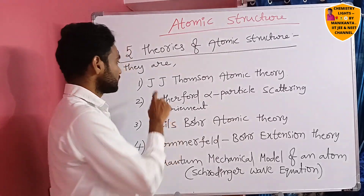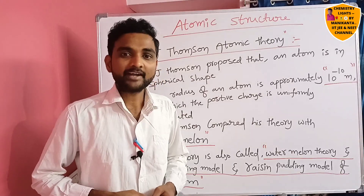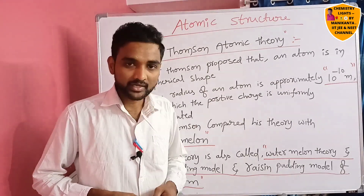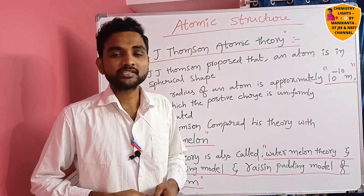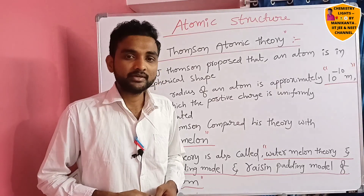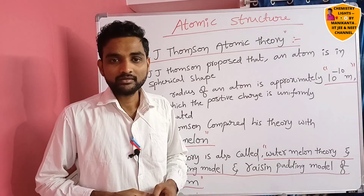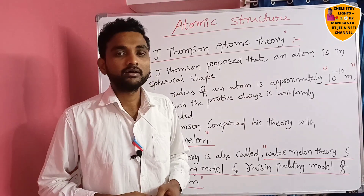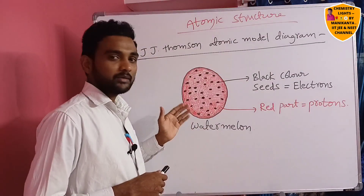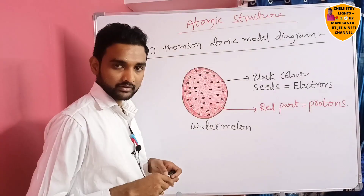Let me start with the first theory — J.J. Thompson's atomic model. J.J. Thompson proposed that the atom is spherical in shape, with a radius of approximately 10 to the power of minus 10 meters, in which positive charge is uniformly distributed. J.J. Thompson compared his theory with a watermelon, so his theory is also called the watermelon theory, the plum pudding model, and the raisin pudding model.